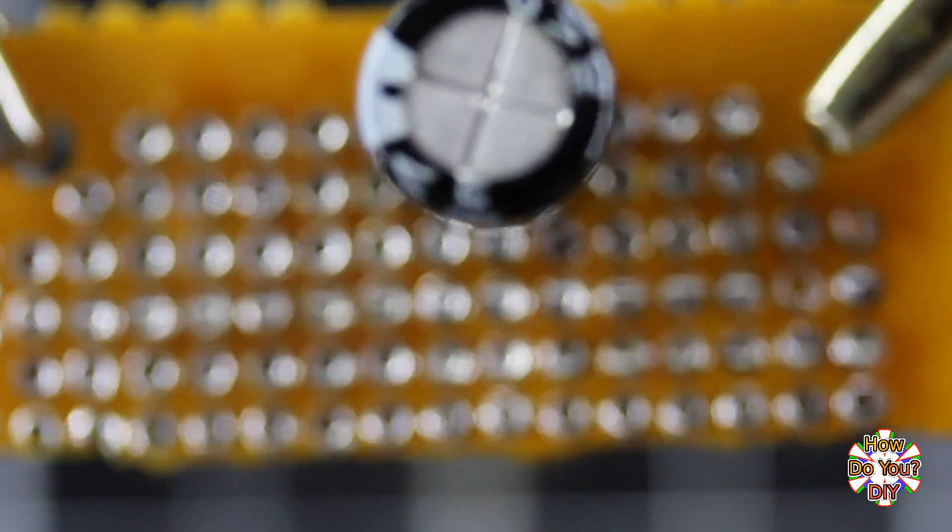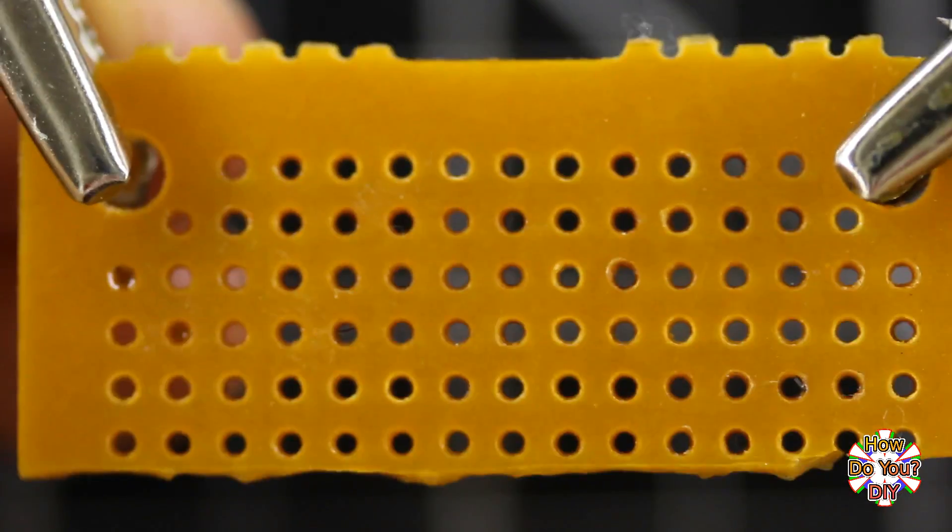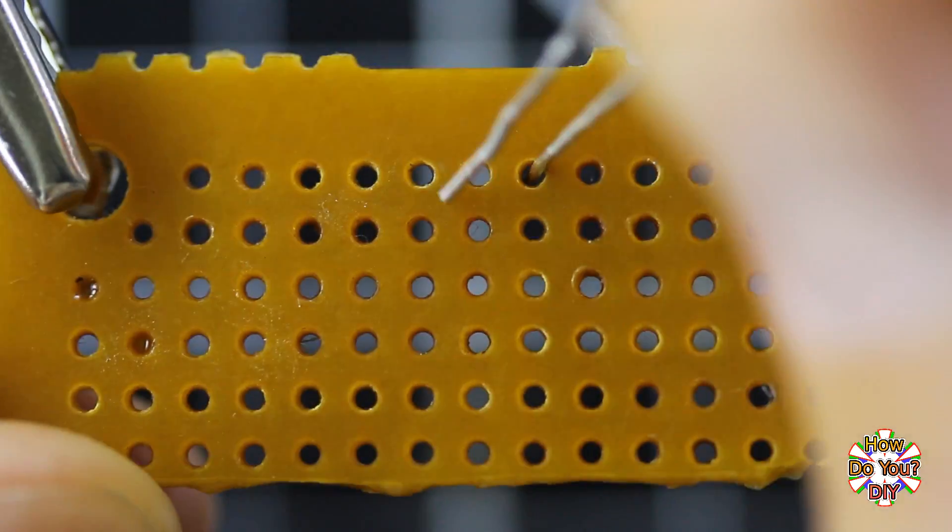When you add a part to these boards, you can add it to either side, but typically you'll want to add it to the side without the copper pads. After guiding the leads through some holes, bend them to hold the part in place.